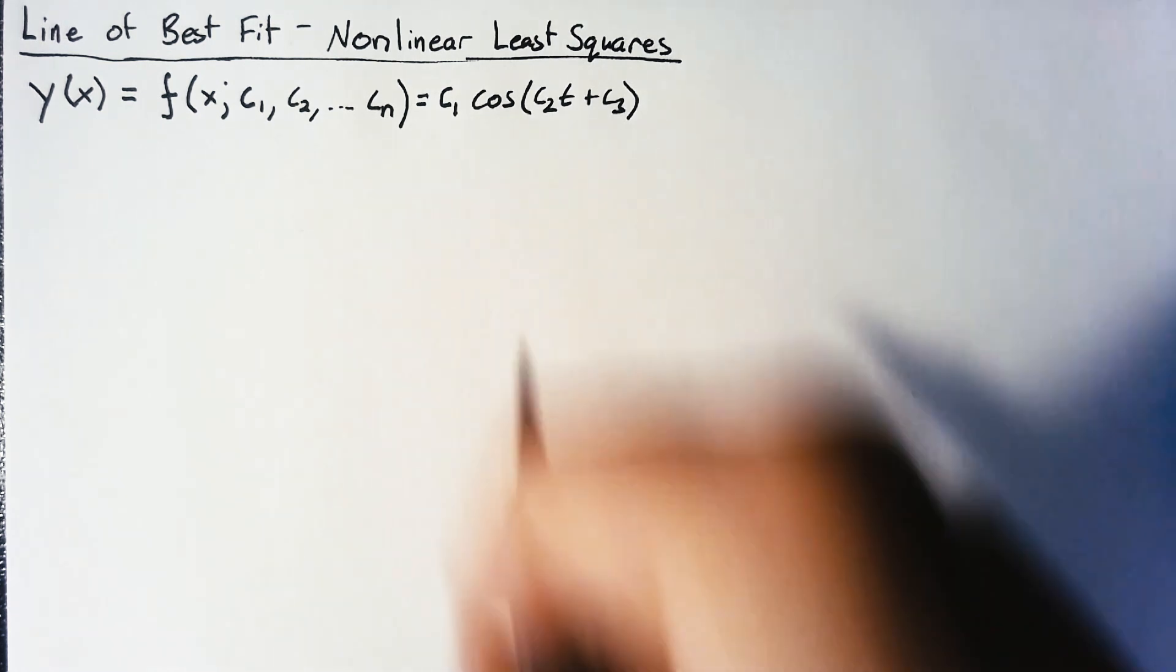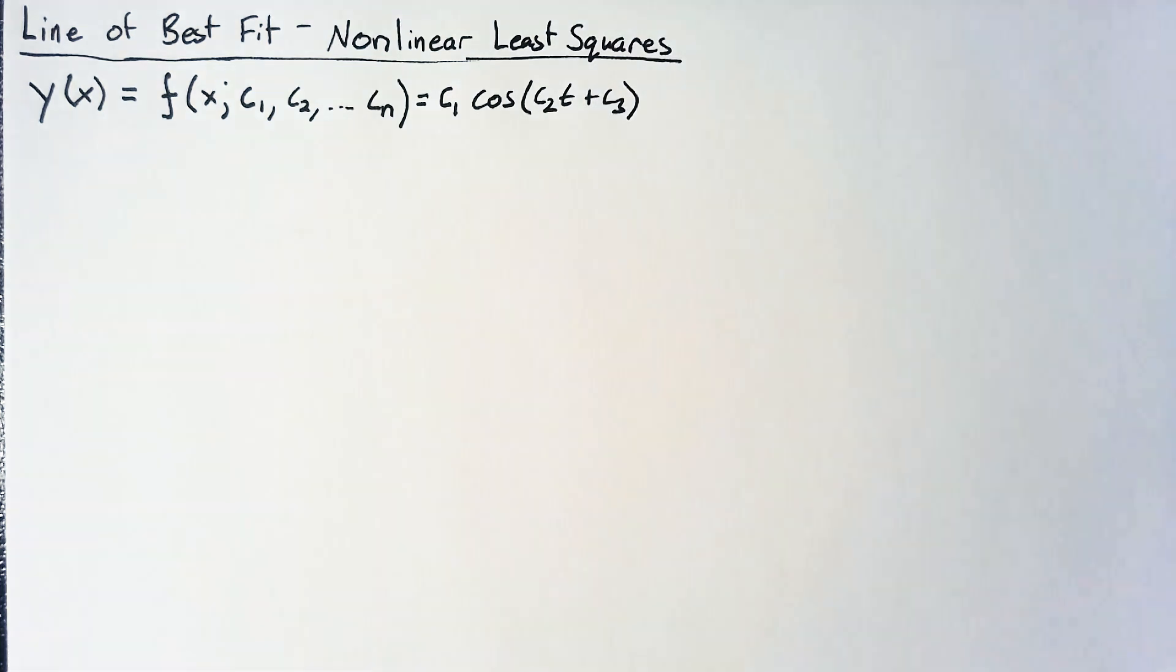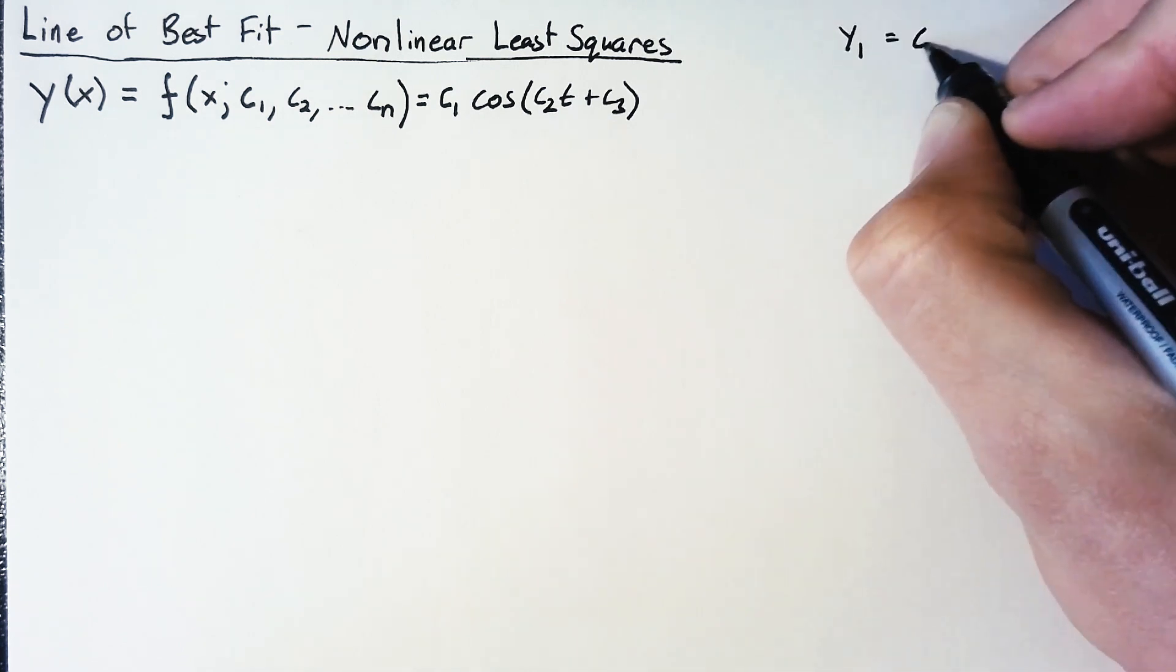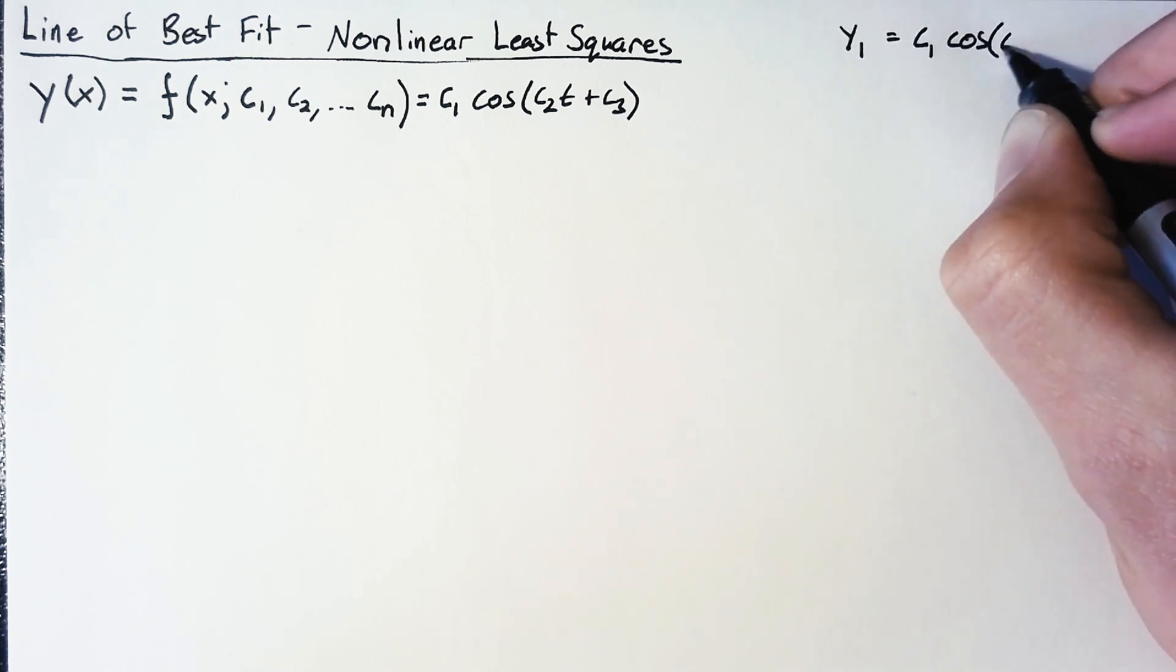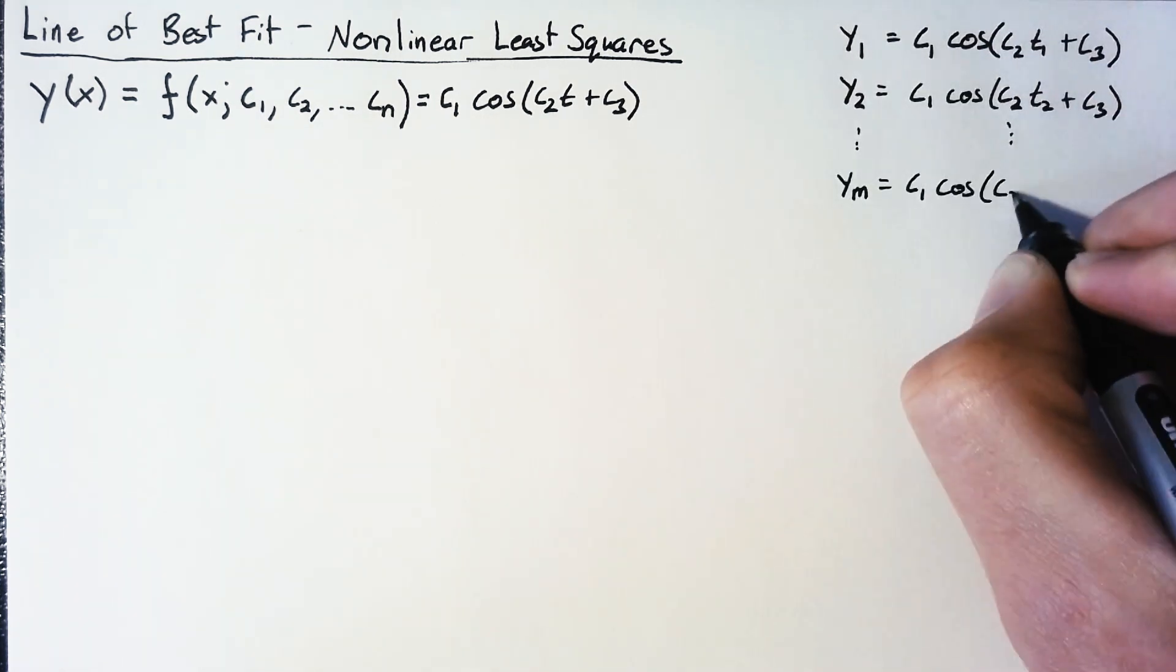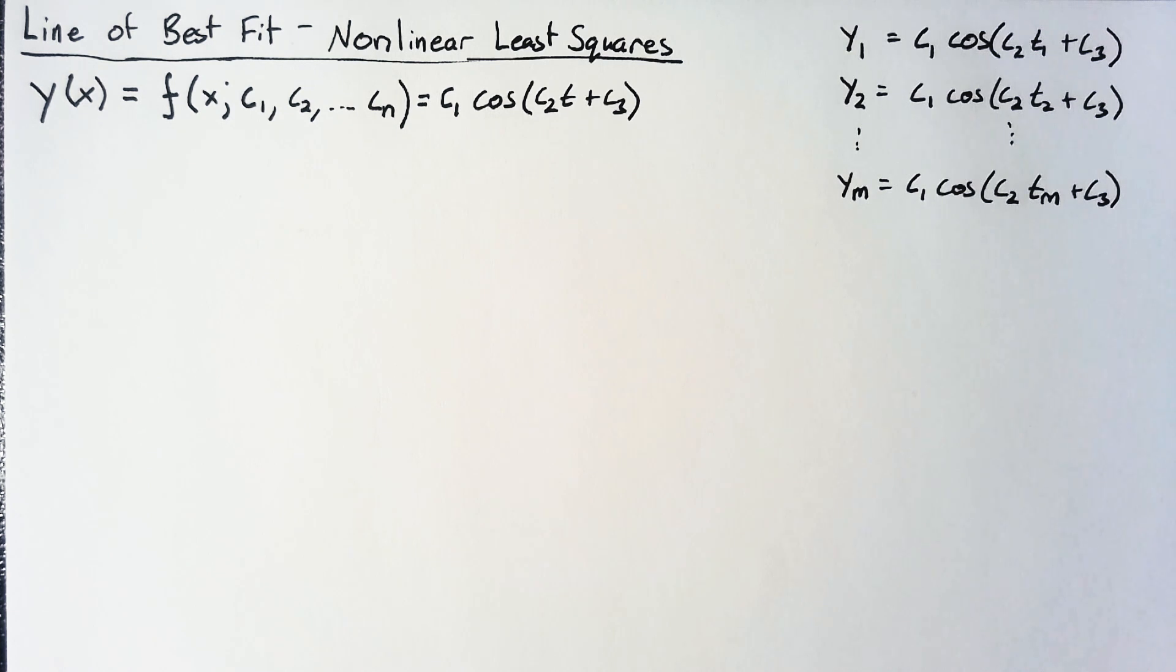The important thing to note here is that we cannot simply write this as a sum of parameters multiplied by some function. There's no way to reorient this equation in that context. So what we're going to do is write out our data in terms of these equations. We can say that y1 equals c1*cosine(c2*t1 + c3), and we can do that for a couple of other points as well.